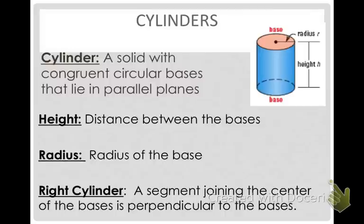Now the next solid that we're going to look at is cylinders. A cylinder is a solid with congruent circular bases that lie in parallel planes. The height of the cylinder is the distance between the bases. The radius of the cylinder is the radius of the circle, that is the base. And when you have a right cylinder, a segment joining the center of the bases is perpendicular to both bases.